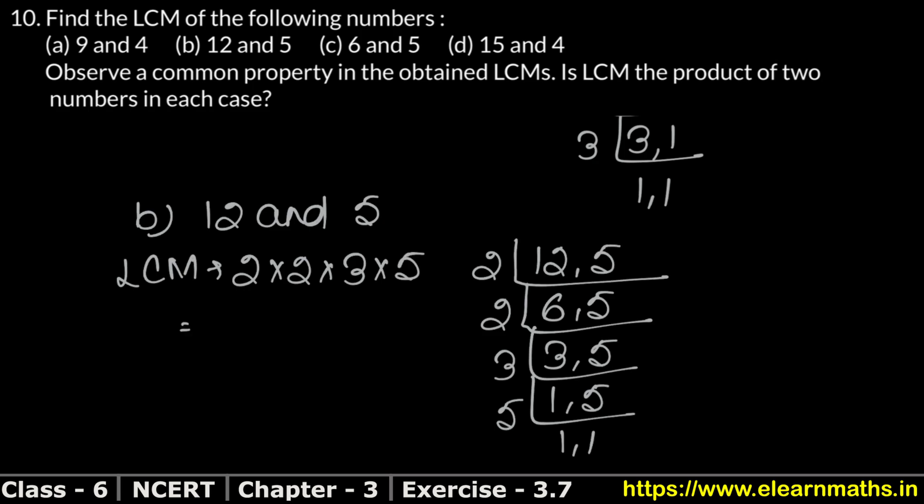So what did this become? 2, 2 is 4. 4, 3 is 12. 12, 5 is 60. If you see, this is also the product of 2 numbers. Let's do C part now.